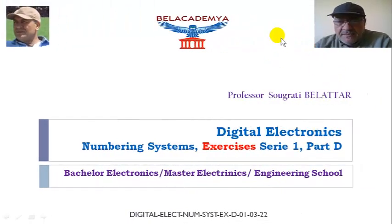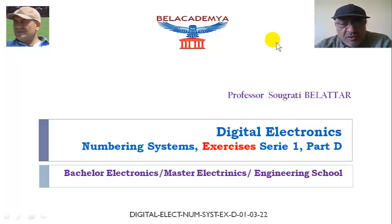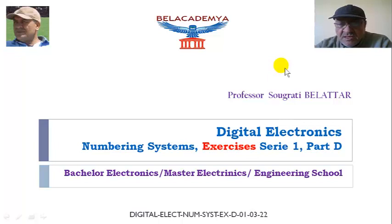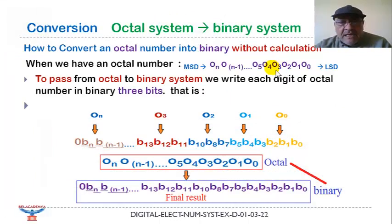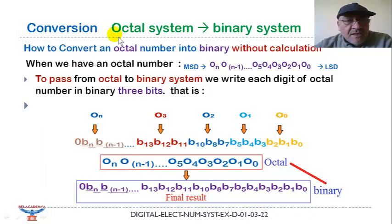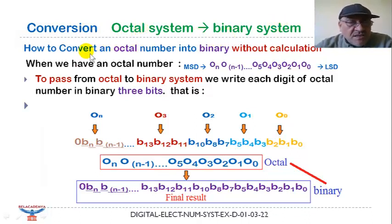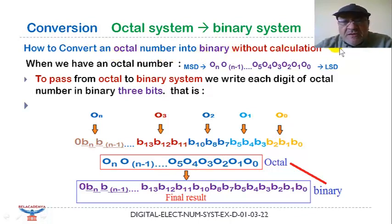Hello everyone and welcome to this video on digital electronics course. Today we will work on exercise numbering systems 3.1, part A. We have to make a conversion from octal system to binary system. The question is how to convert an octal number into binary without calculation.